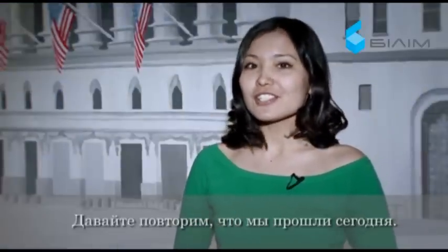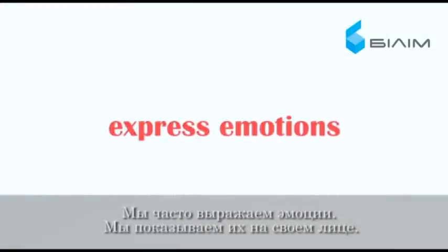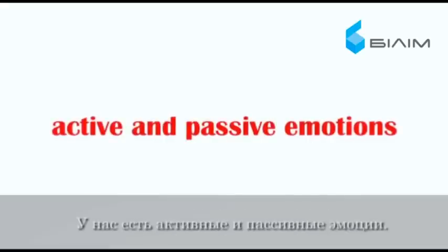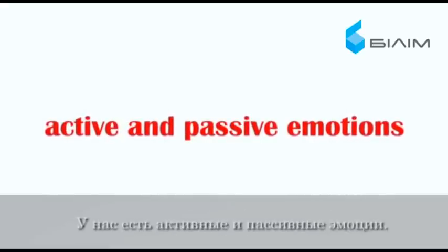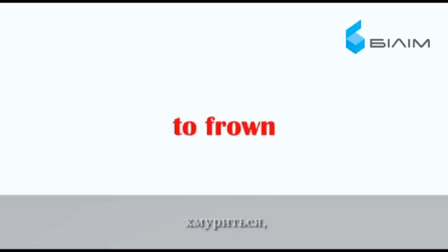So, let's review what we have learnt today. We often express emotions — we show them on our face. We have active and passive emotions. We learnt six active emotions: to smile, to laugh, to frown, to cry, to sneer, and to mock.